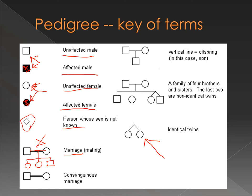Here is an example of a marriage or reproductive event between a male and a female producing a son, or a male offspring. This example here shows two non-identical twins — this is how we represent non-identical twins. And then this would be identical twins down here.